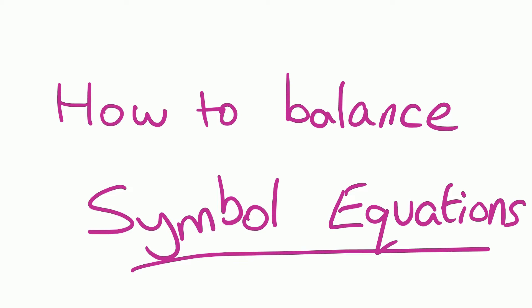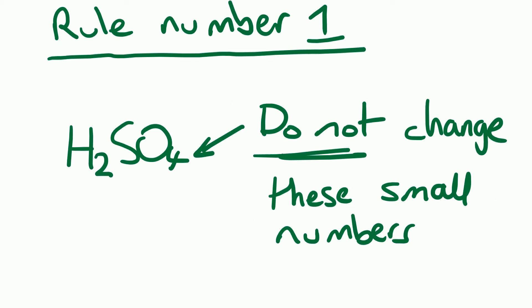The first rule is one we mustn't break: we do not change the small numbers in formulas. So in this case we can't change the little two or the four.